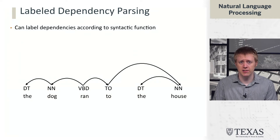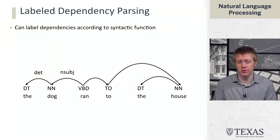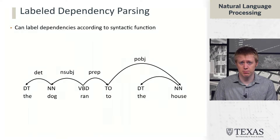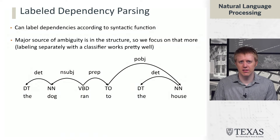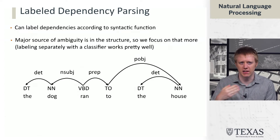We can label these dependencies according to their syntactic function. A lot of these labels are not very creative — for example, a determiner modifying a noun phrase gets the 'determiner' label. A noun modifying a verb can be a subject, so the label says something about grammatical role. Many labels are easily determined in a shallow way based on just the tags of the head and modifier. The major ambiguity we think about resolving is the structure, and if you want to assign labels, you can take the structure and run a classifier at the end.